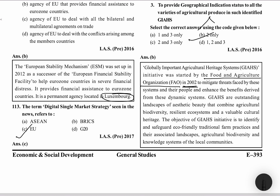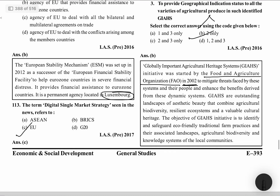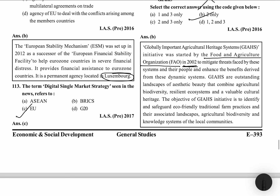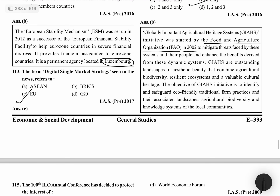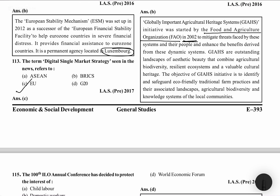To mitigate the threats faced by these systems and their people, and to enhance the benefits derived from these dynamic systems. These are outstanding landscapes of aesthetic beauty which combine agricultural biodiversity and resilient ecosystems, and a valuable cultural heritage. The objective is to identify and safeguard eco-friendly traditional practices and their associated landscapes, agricultural biodiversity and knowledge systems of the local communities.